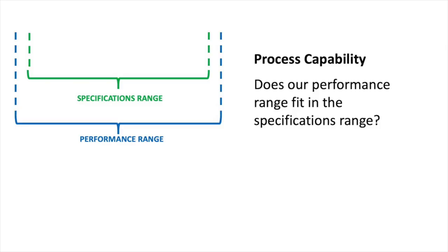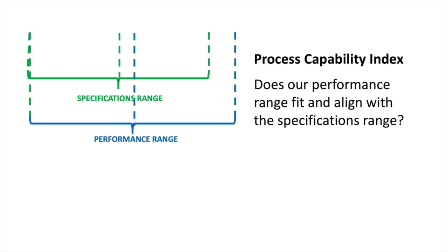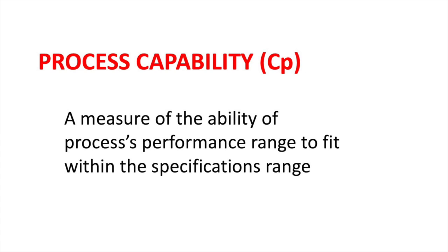The metrics used in mainstream industry for this are called Process Capability and the Process Capability Index. The Process Capability metric, CP, can be used to understand how well our process can fit within the specification limits. The Process Capability Index, CPK, looks at both fit and alignment to the specification limits. Process Capability is the simpler of the two metrics, represented by the symbol CP.